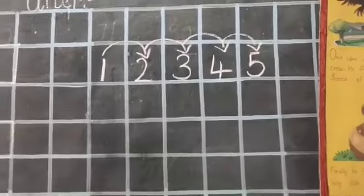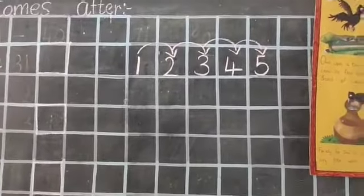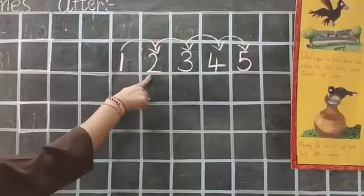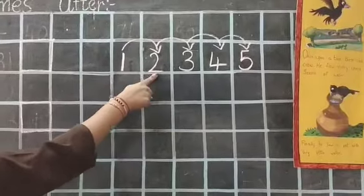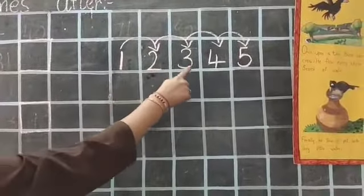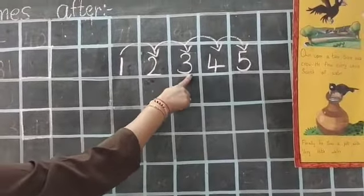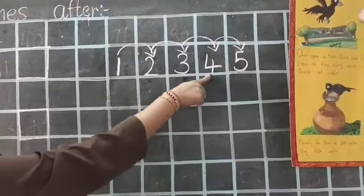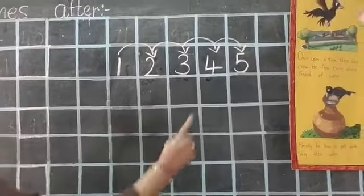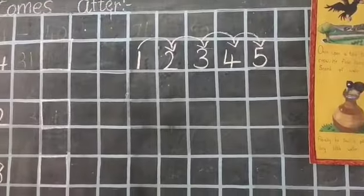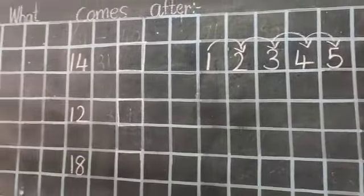Understood children? So the next number. After 1, which number? 2. After 2, which number? 3. After 3, which number? 4. Like this you have to do. So let's see the numbers.